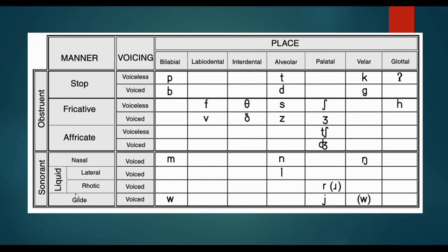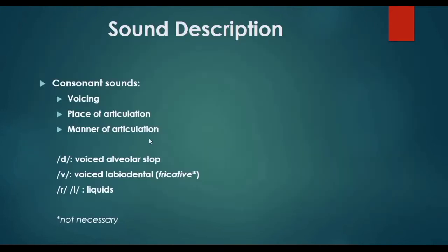The nasals, the liquids, and the glides are sonorants. But let's go back to our main topic, which is how we can describe the consonant sounds. Consonants can be classified according to voicing, place of articulation, and manner of articulation. Sound description has to do with how we name those sounds.